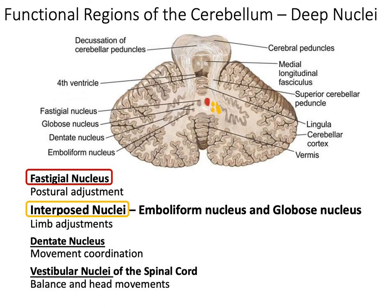Next we have the dentate nucleus, associated with the lateral region and responsible for movement coordination. Now this last one is a little special: the vestibular nuclei of the spinal cord. Notice it says spinal cord, not cerebellum. Technically the vestibular nuclei is not a cerebellar nucleus; however, we still group them together because of its function of balance and head movements. It does coordinate with the flocculonodular lobe, even though it's not located there.